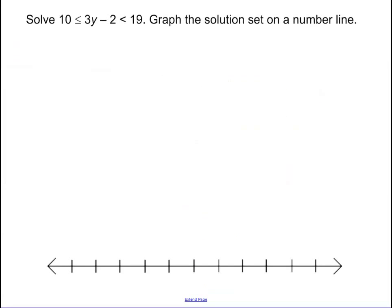So solving an 'and', your variable is going to be sandwiched in between two numbers. So what we're going to do is if we add 2 to all of our inequalities, that's going to cancel that out. We're going to have 12.